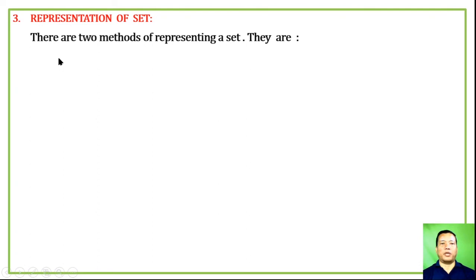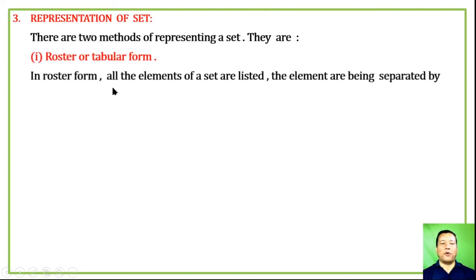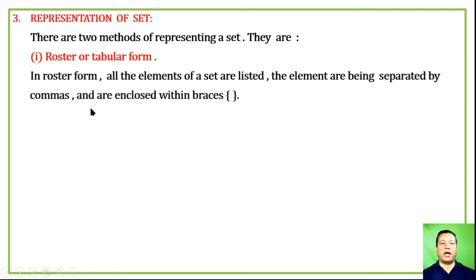Representation of a set: There are two methods of representing a set. First is the roster or tabular form, where all elements of a set are listed, separated by commas, and enclosed within braces. Second is the set builder form, also called the rule form.